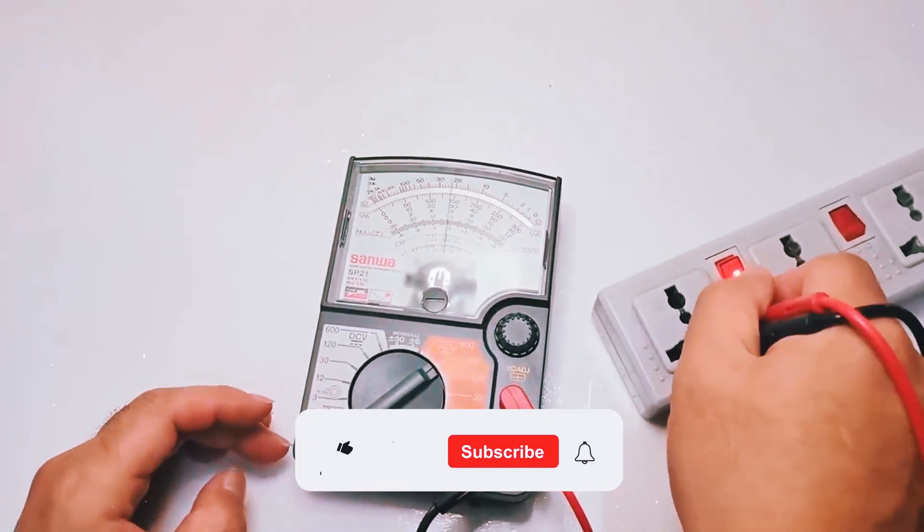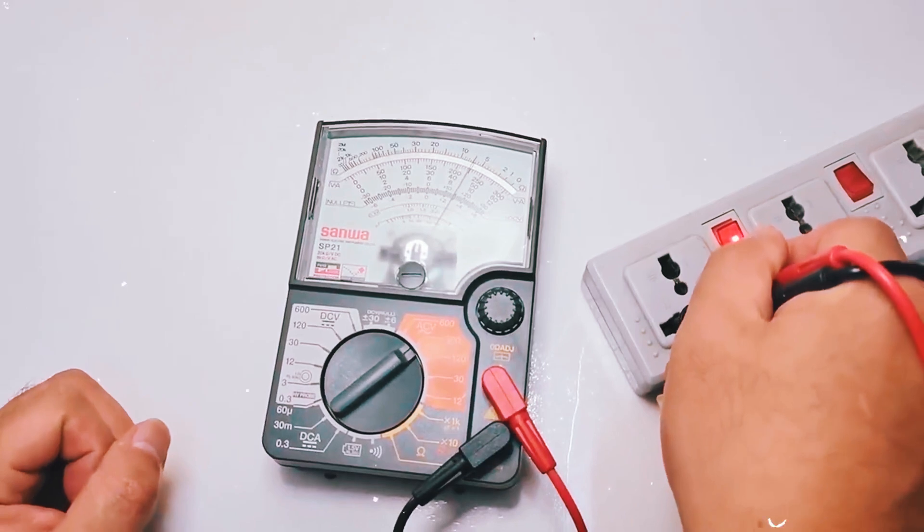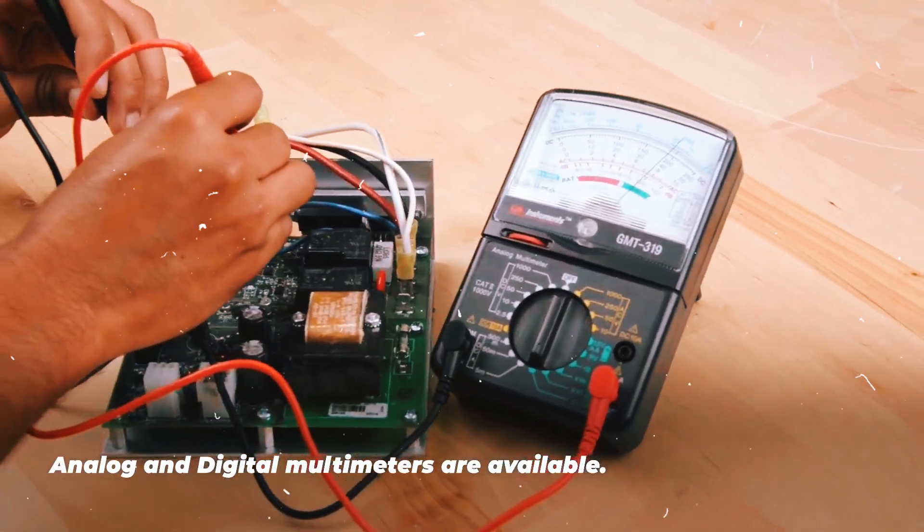But if you're working in a rough environment or need to monitor fluctuating signals like audio or power systems, an analog multimeter might be better for you.